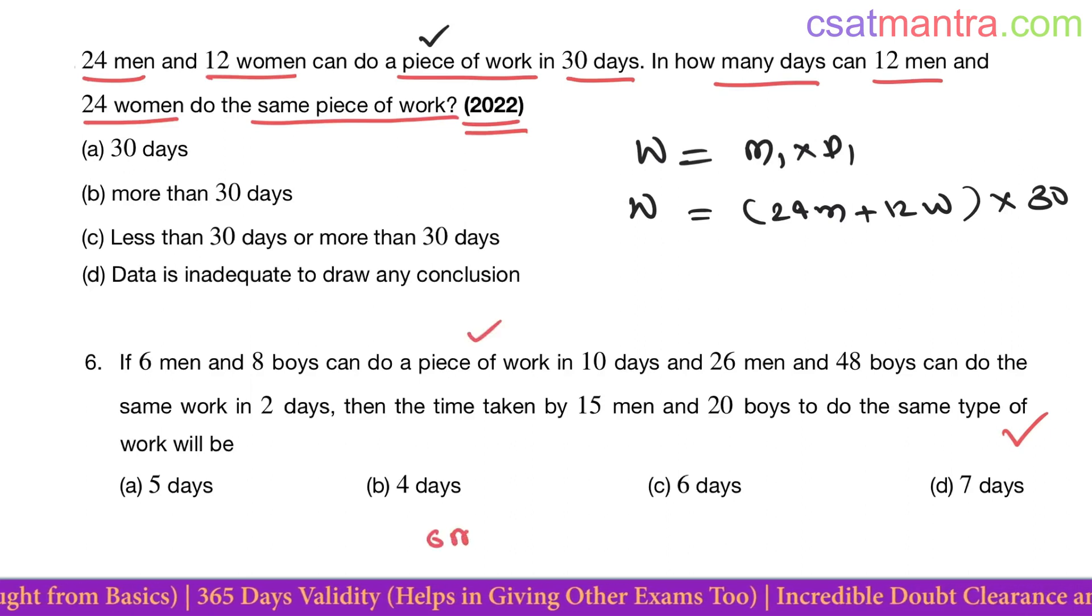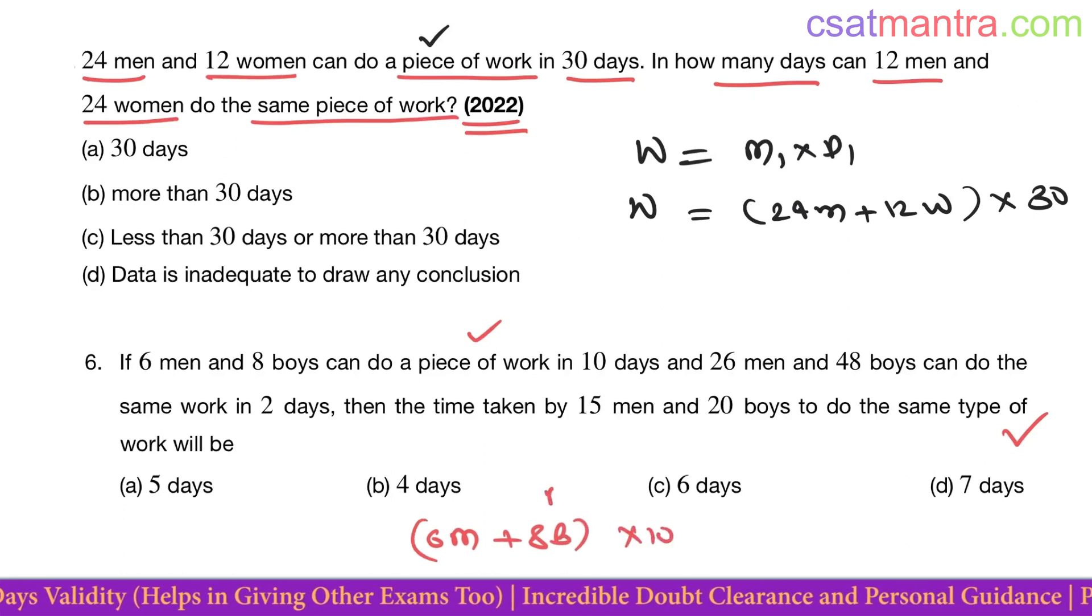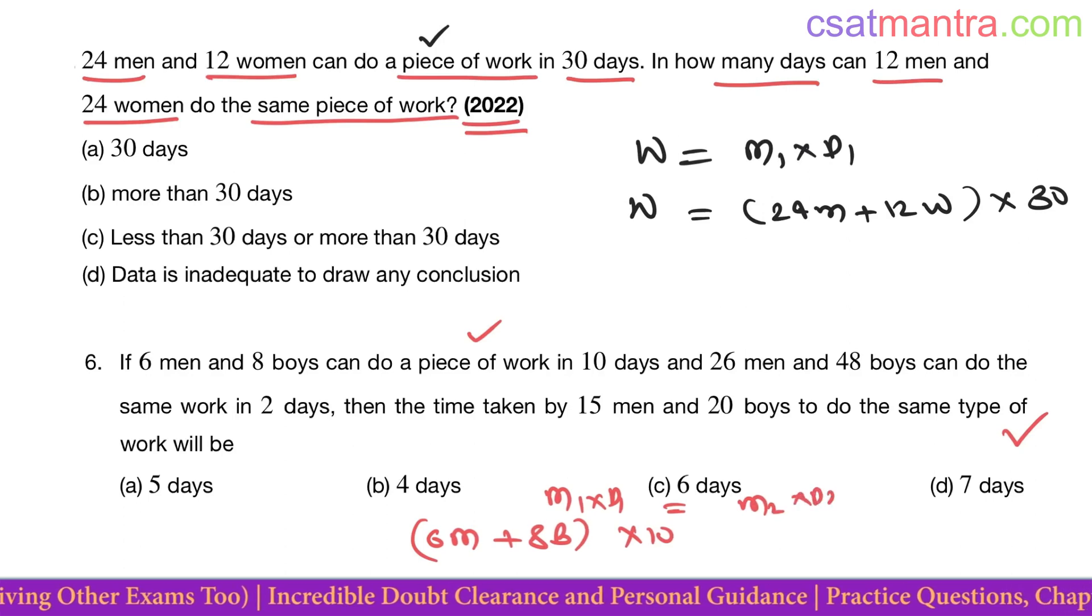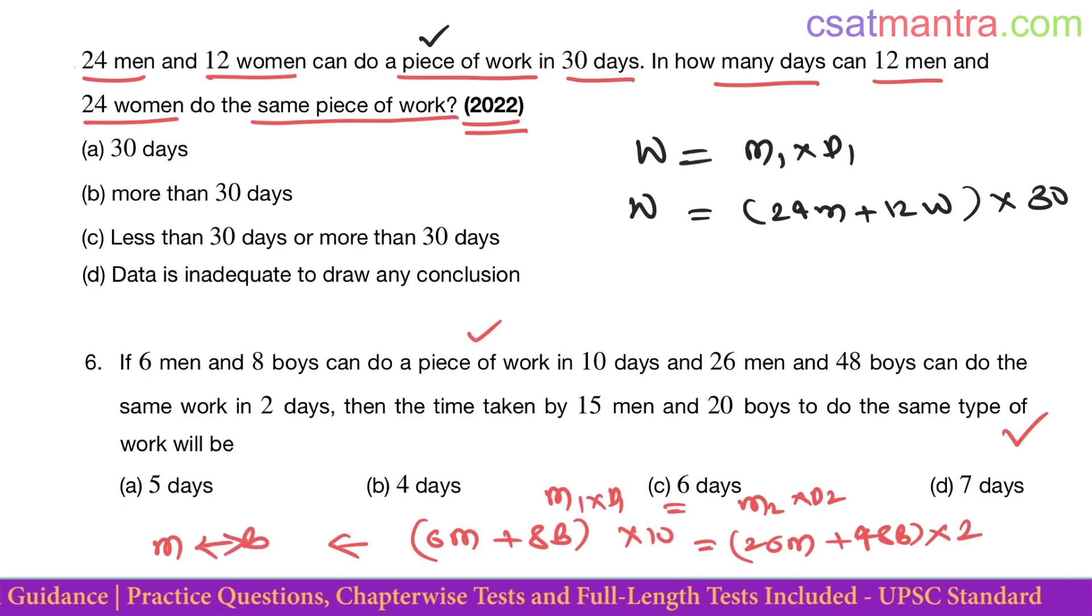Whereas in this problem we'll be having like this: 6m plus 8b into 10. m1 into d1 is equal to m2 into d2. m2 is 26m plus 48b into d2 is 2. Here we'll be getting a relationship between m and b.